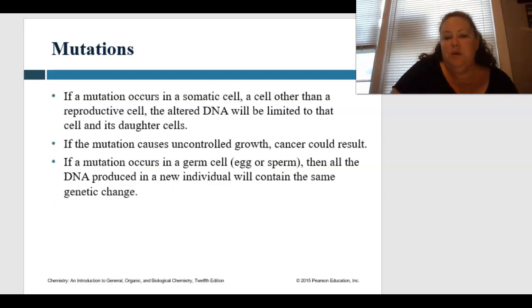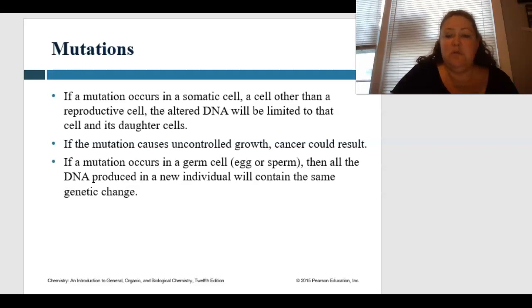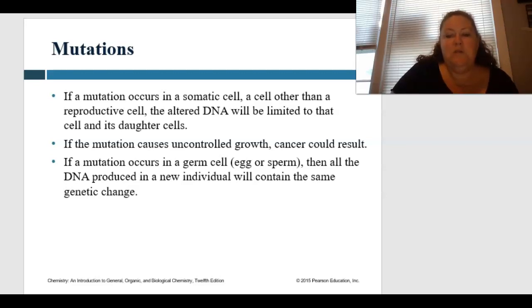What are mutagens? If a mutation occurs in a somatic cell — a cell other than a reproductive cell — then the altered DNA will be limited to that cell and its daughter cells, just the ones that it specifically reproduces into. If a mutation causes uncontrolled growth, then cancer could occur.